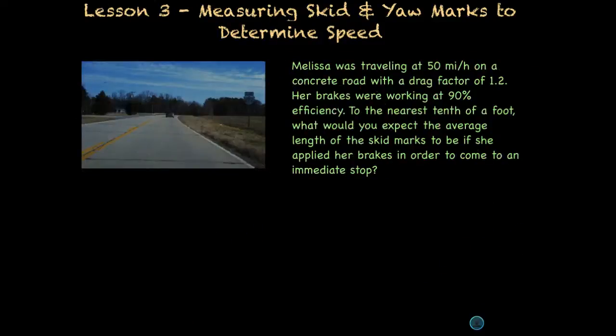Let's try another example. So this one's a little bit different in that we are given how fast she was going. So we know that Melissa was traveling at 50 miles per hour on a concrete road. There's a drag factor of 1.2. Her brakes were working with 90% efficiency. And we want to determine how long the skid marks would be if she applied her brakes to come to an immediate stop. So how long would the skid marks be?